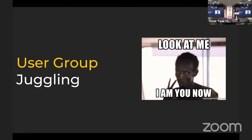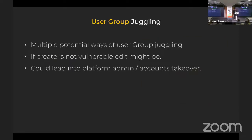This is my favorite — user group juggling, my jewel that keeps on giving. I've done 12 talks just about that thing. User group juggling is when you're adding a user to a user group, then start changing the user groups to see if you can add your user to another group, or your group to another user — doing any kind of fuzzing. Sometimes create is not vulnerable but editing is, so create a user with your user group, then change his user group and he ends up in another company.